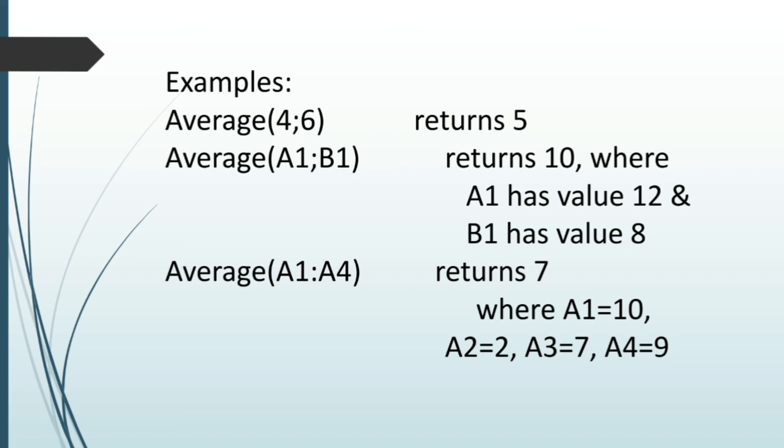Average for the cell ranges a1 to a4 returns 7 where value of a1 is 10, a2 is 2, a3 is 7 and a4 is 9. So 10 plus 2 plus 7 plus 9 is 28. 28 divided by 4 is 7. So average of the range a1 to a4 is 7.